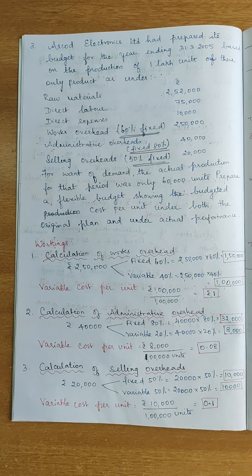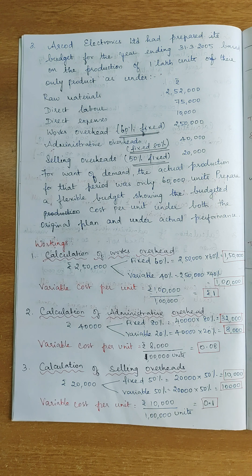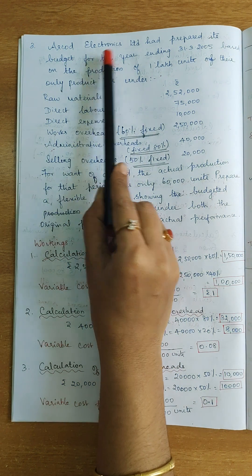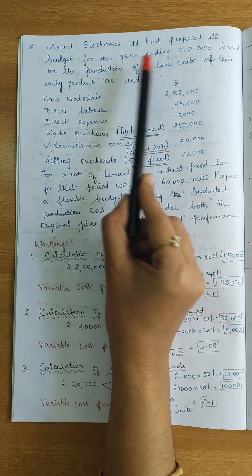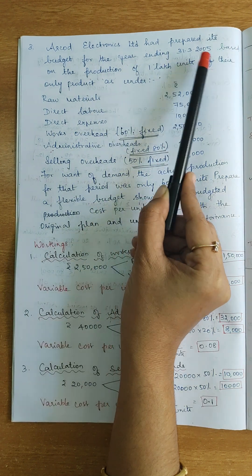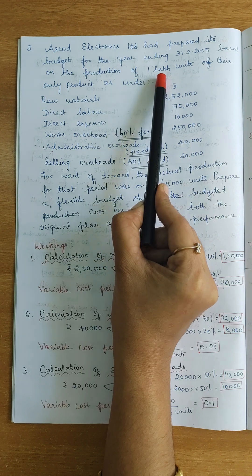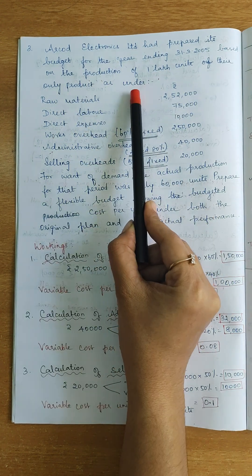Hi, welcome to my channel. Flexible budget — already let me explain and solve a sum. This is the third sum. Question: Arquad Electronics Limited had prepared its budget for the year ending 31-3-2005 based on the production of 1 lakh units of the only product as under.